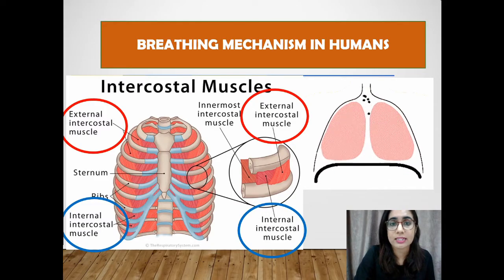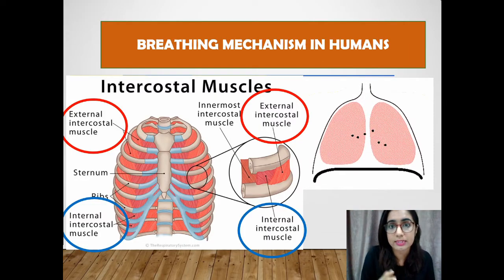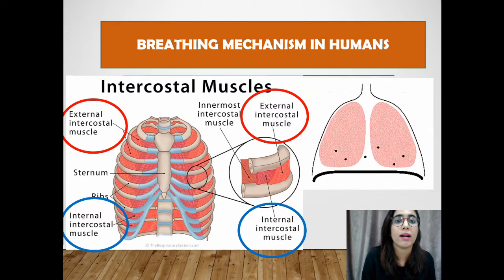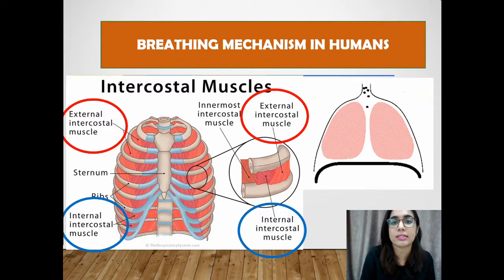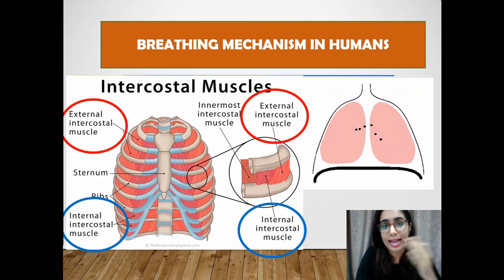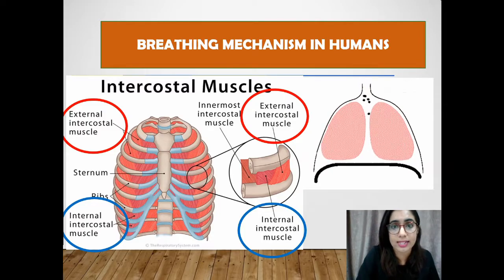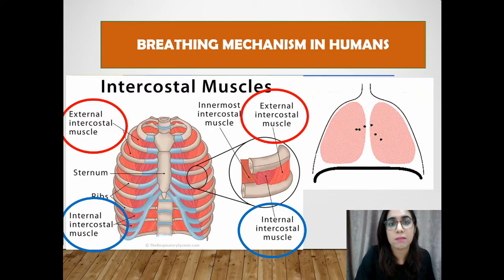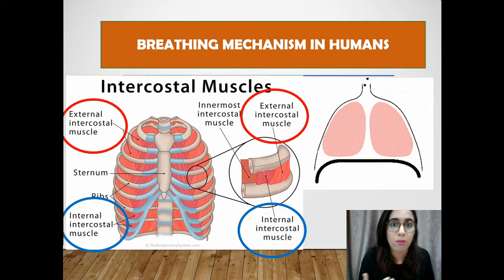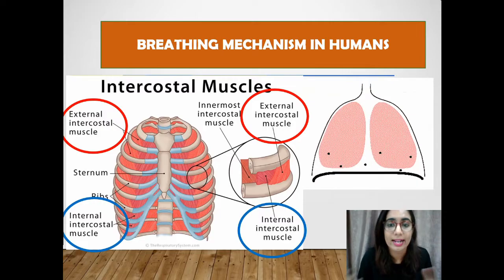The external intercostal muscles are located between the ribs with muscle fibers slanting towards the sternum, while the internal intercostal muscles are located between the ribs with muscle fibers running at right angles to the external intercostal muscles, as shown in the picture on the slide. Both intercostal muscles work antagonistically — when one contracts the other relaxes.